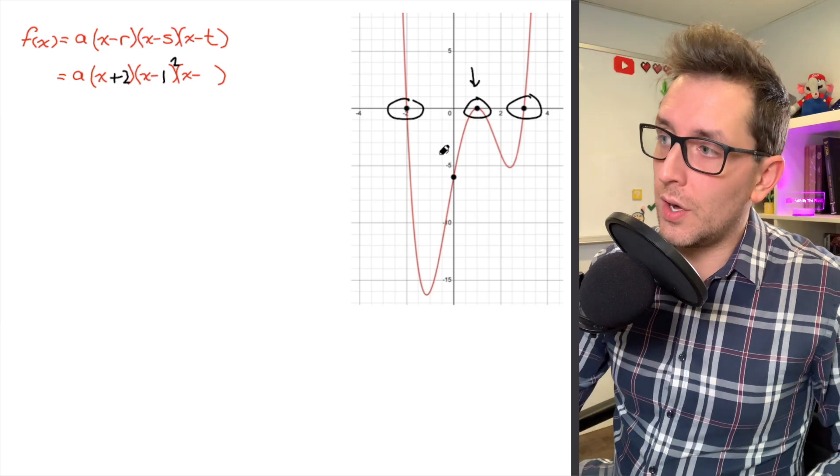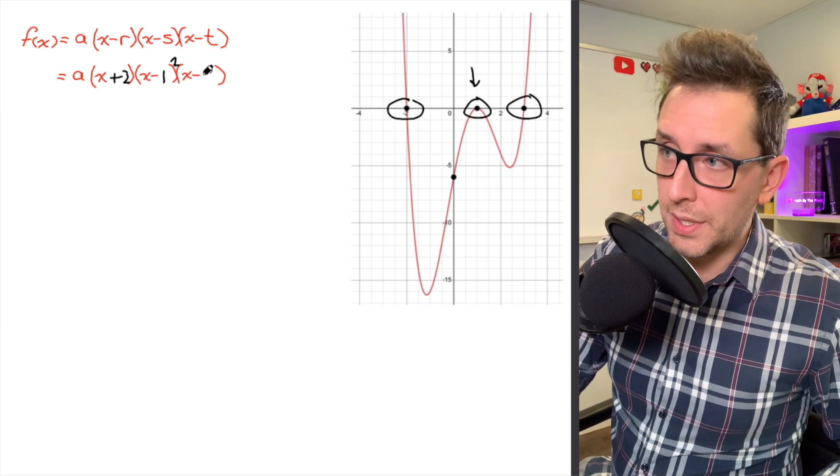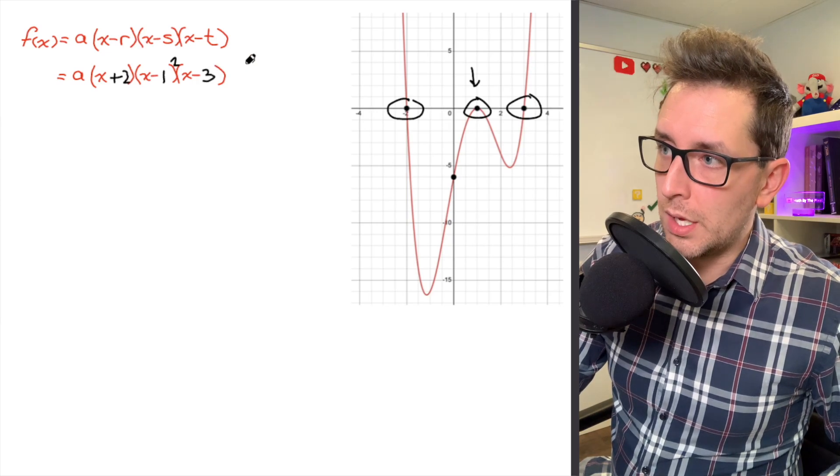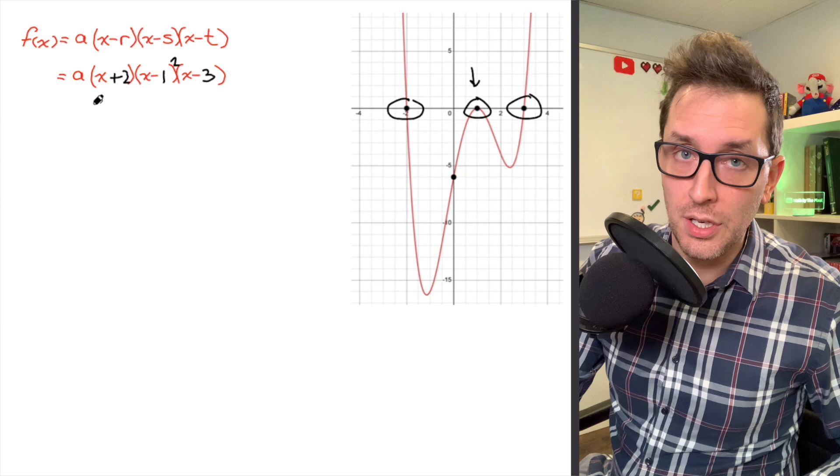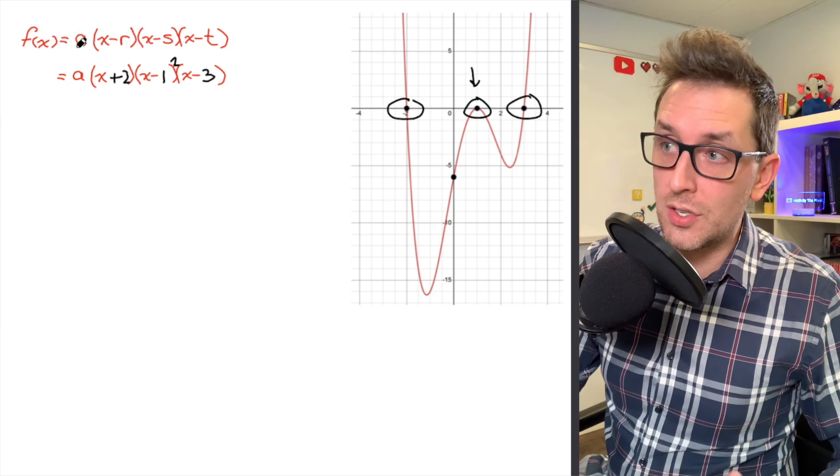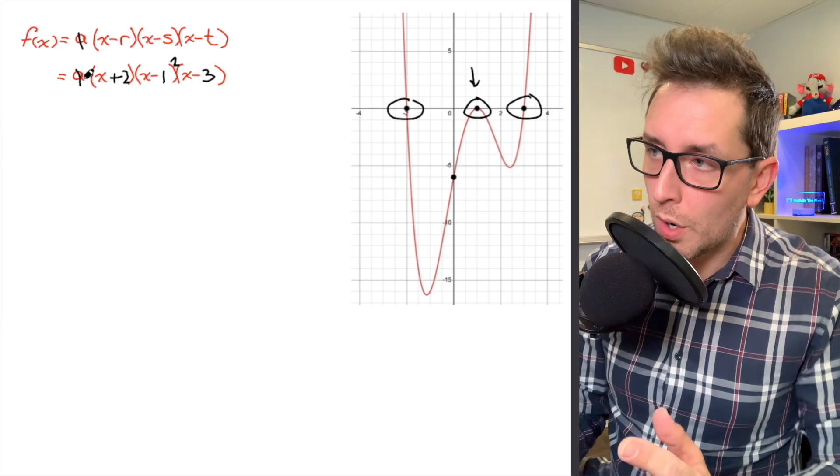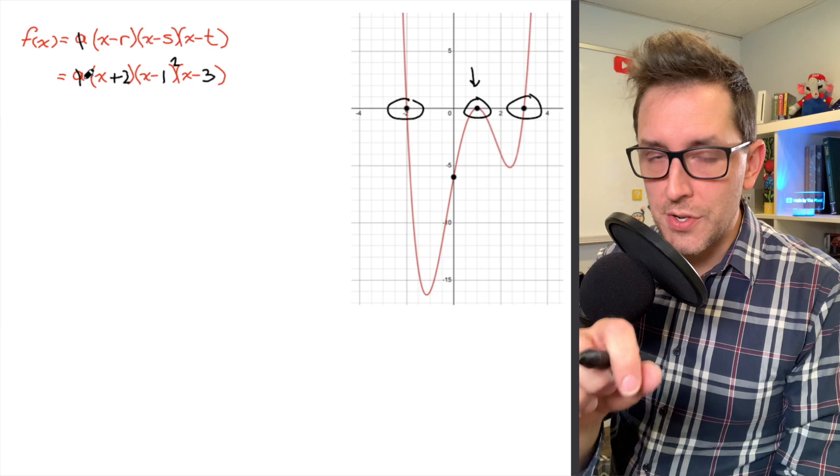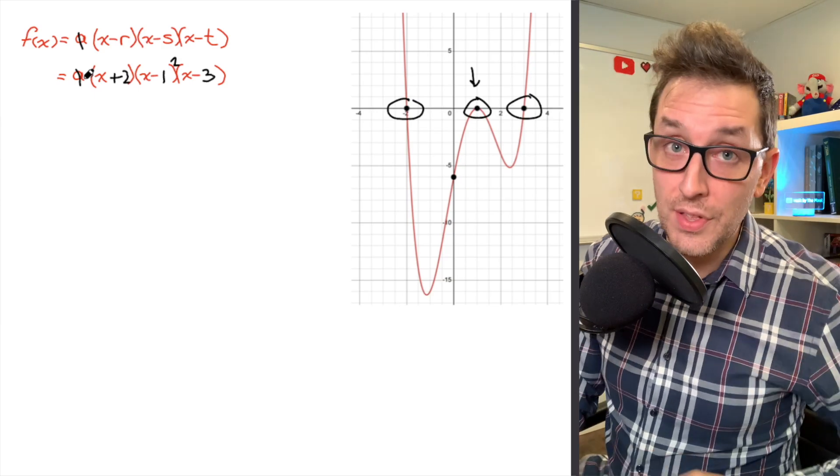Now if we continue moving right along to the next x-intercept, which we know is located at 3, again I can just replace that t parameter with a 3, but there's still the matter of this pesky a parameter at the beginning of my function. Now a common mistake I see a lot of my students make is they assume that that value of a is 1. They just ignore that a parameter and they just say, I'm going to assume that's a 1. Now if you do that, you are ignoring a potential stretch or compression factor in the vertical direction that is going to impact the shape of this graph.